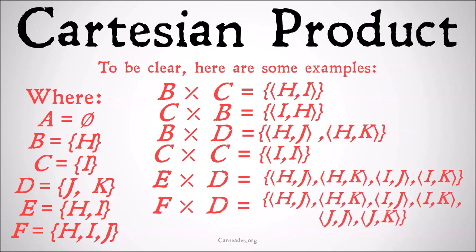And finally, the Cartesian product of F and D is going to be the class of the ordered pair H, J, the ordered pair H, K, the ordered pair I, J, the ordered pair I, K, the ordered pair J, J, and the ordered pair J, K.